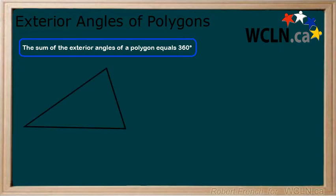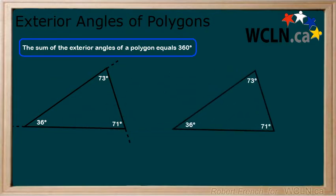Consider the following irregular polygon. It has three interior angles, which are 36, 73, and 71. Now pick a direction and extend the lines of the polygon. For this example, we will do both directions to show that either works. We have extended the lines and identified the angles.